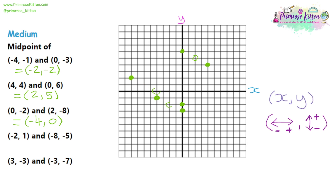Question 4: we start with (-2, 1) — 2 to the left and 1 up — and then (-8, -5) — 8 to the left and 5 down. Label those coordinates, join them together, and identify the central point. You can check it's diagonal 3 squares to each end point. From the centre (0, 0), the x-coordinate is 5 to the left, so negative 5. It is 2 down, so negative 2. The answer is (-5, -2).